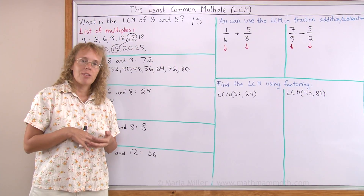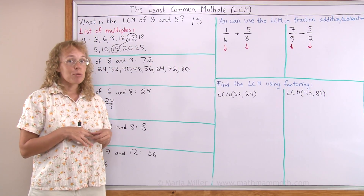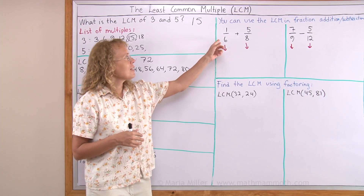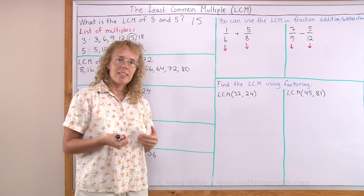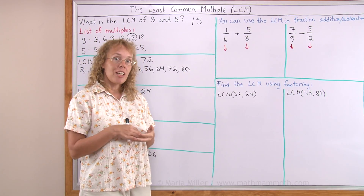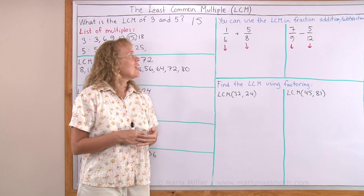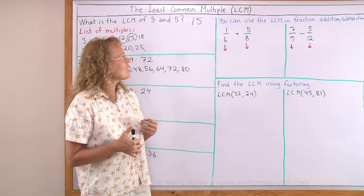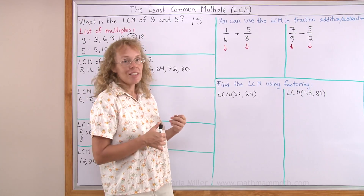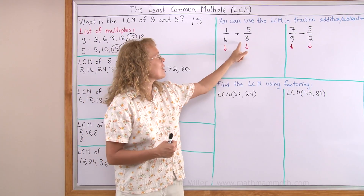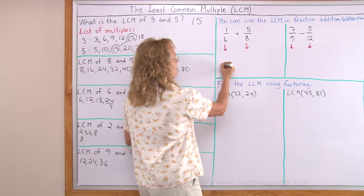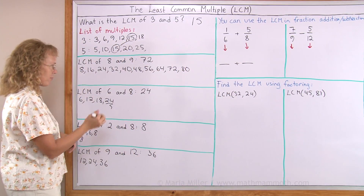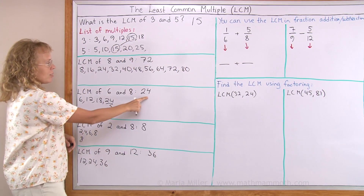One of the main usages for this concept is when you're adding fractions. For example, 1/6 plus 5/8 — we need to find a common denominator, and the best common denominator we can use is the least common multiple of 6 and 8. And we already solved it: it was 24.